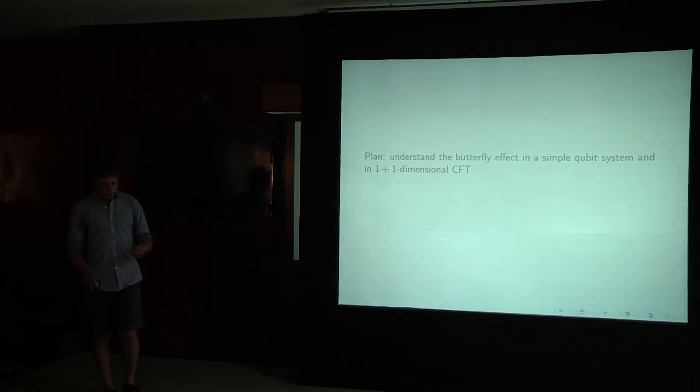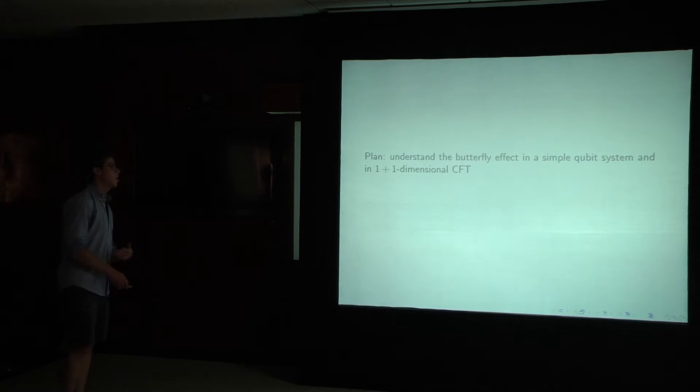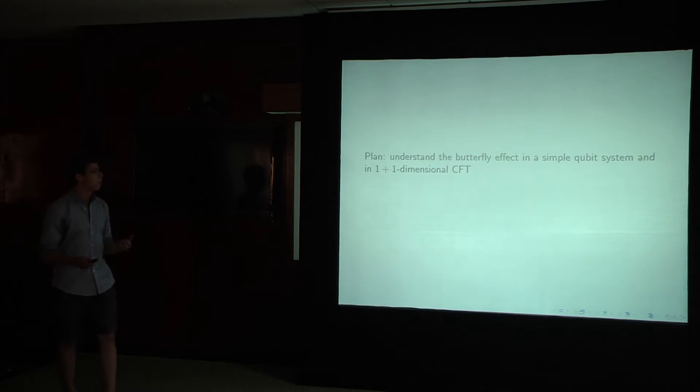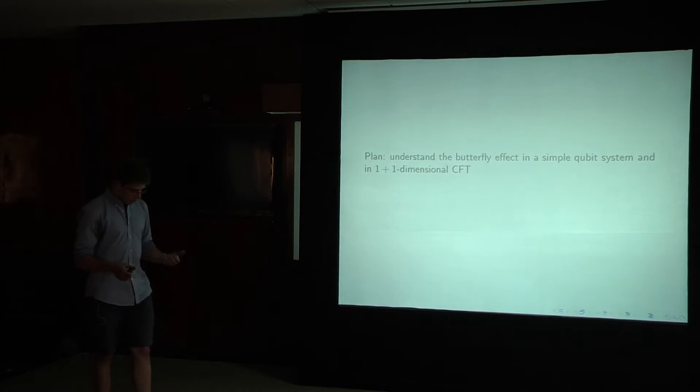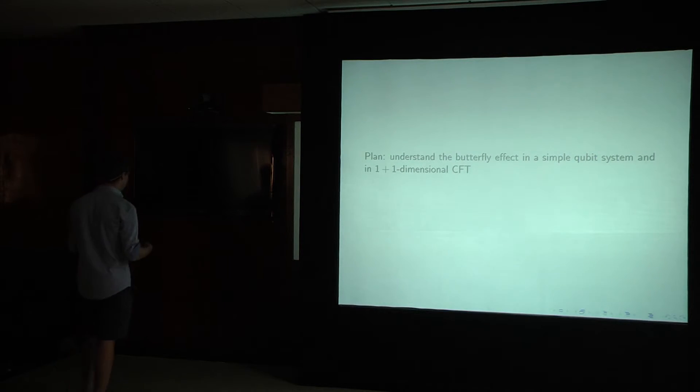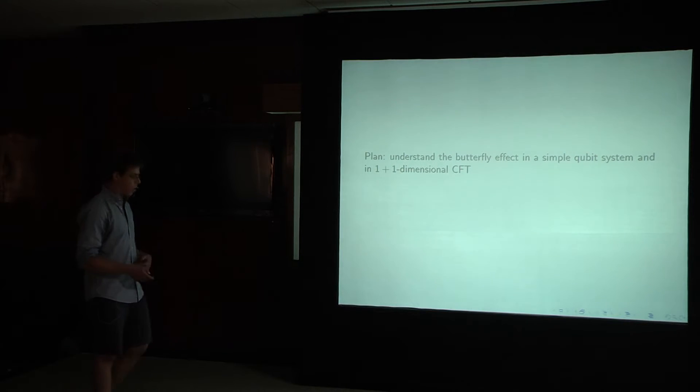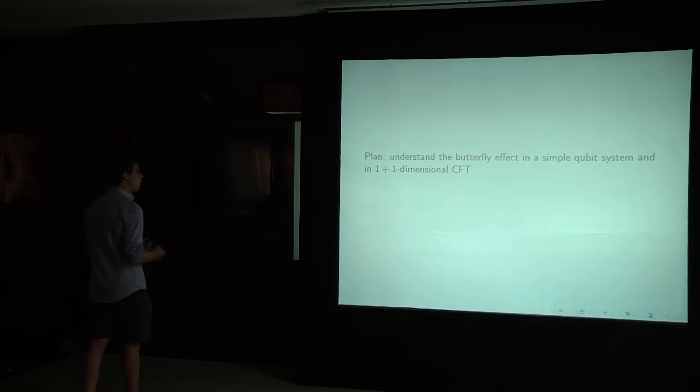So the plan is to understand the butterfly effect, first in a simple qubit system, or spin chain, and then in 1 plus 1 dimensional conformal field theory. The spin chain example is useful because it's a particular example of a concrete system. It's about as concrete as you can get. And then we can sort of attack it directly, and then use what we learned from those results to go and study conformal field theory.